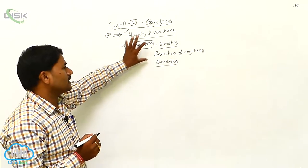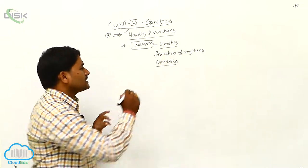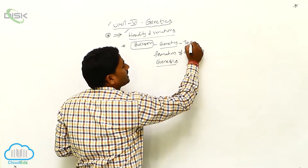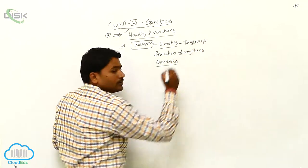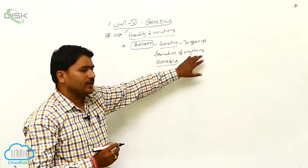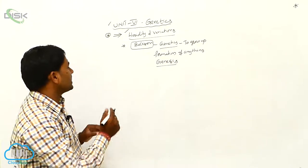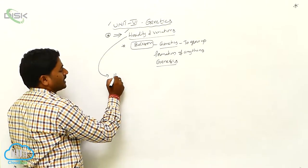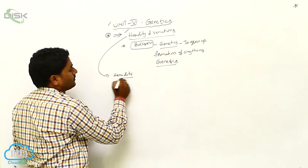There are different types of meanings for genetics. Sometimes genetics is defined as 'to grow up,' otherwise 'formation of anything,' or Genesis. Genetics deals with two important characters: one is heredity, and the second one is variations.